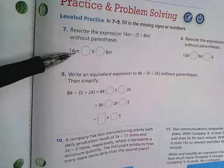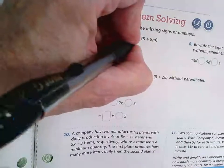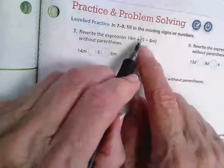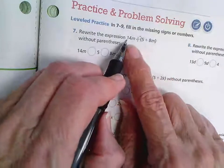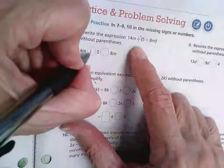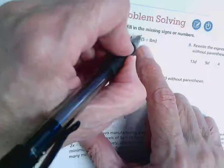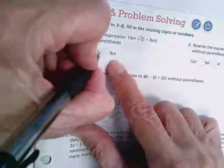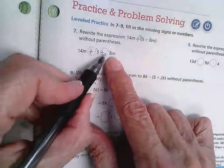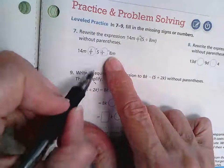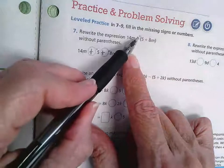So here we're going to be changing our sign. And that means that this sign is going to change every sign inside here. So we're going to have 14m plus a negative 5 plus a negative 8m. So each of these gets a negative put with it when we change this to a positive and we have the negative sign outside the parentheses.